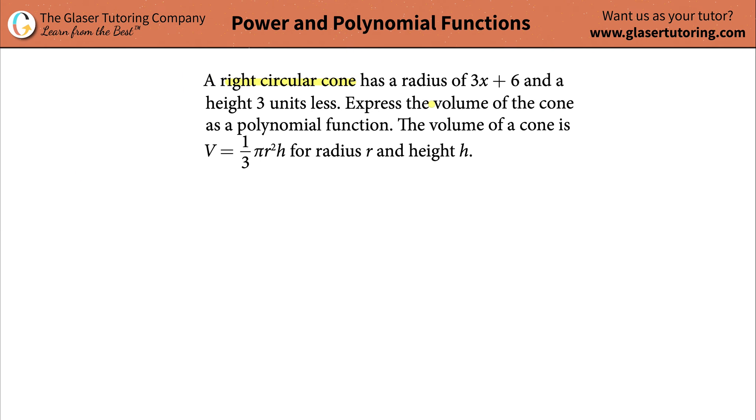Let's take a look at the following problem. It says a right circular cone has a radius of 3x plus 6 and a height 3 units less than, I guess, its radius. Express the volume of the cone as a polynomial function. The volume of a cone is v equals 1/3 times pi times the radius squared times the height.